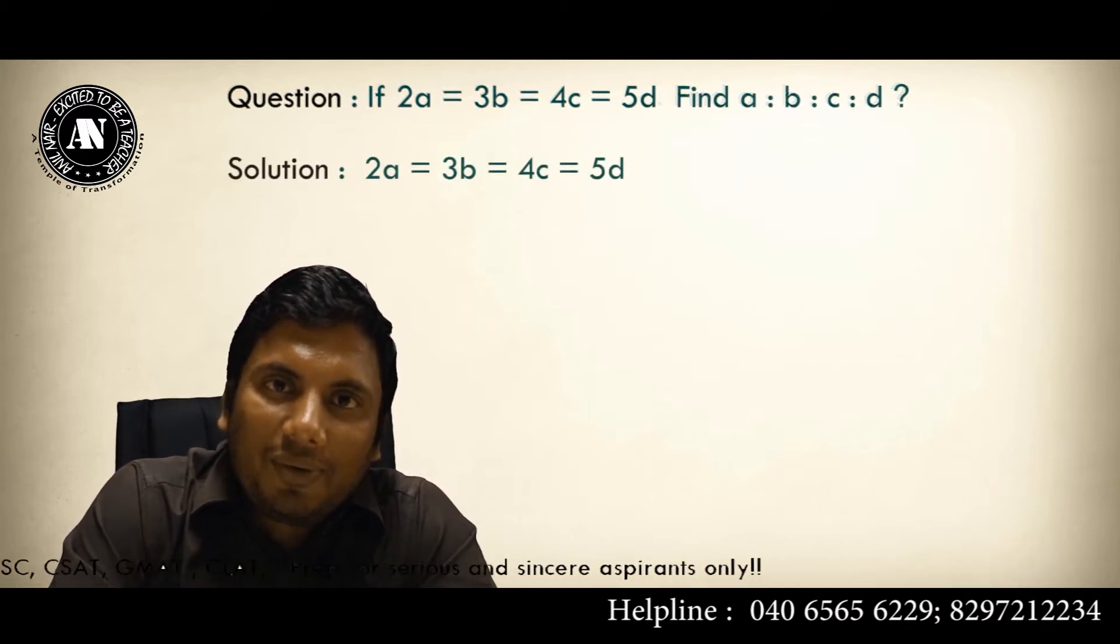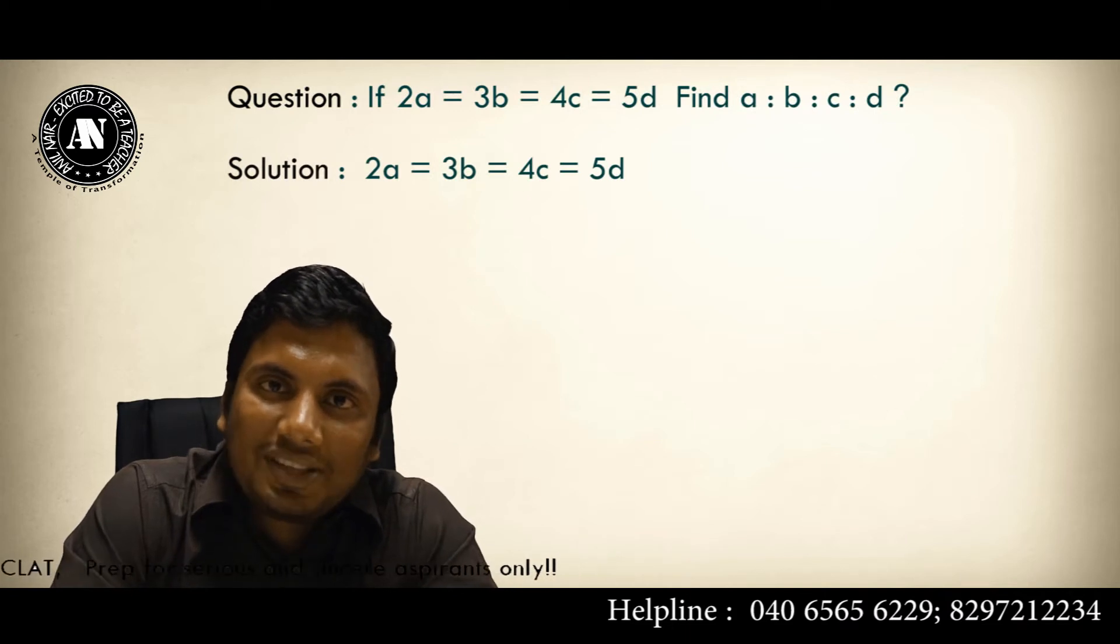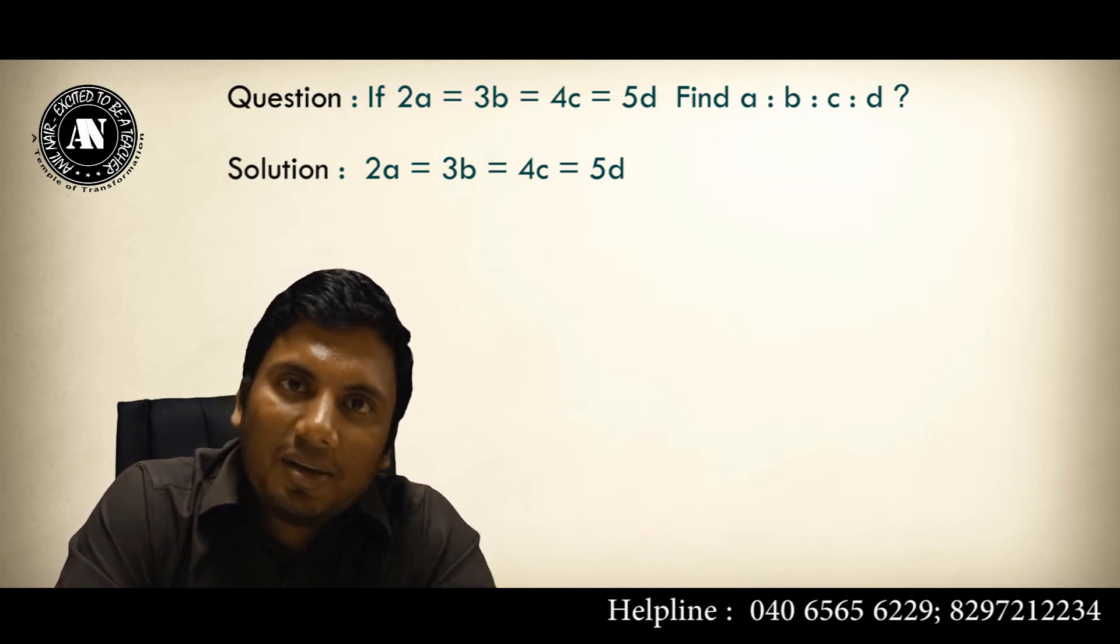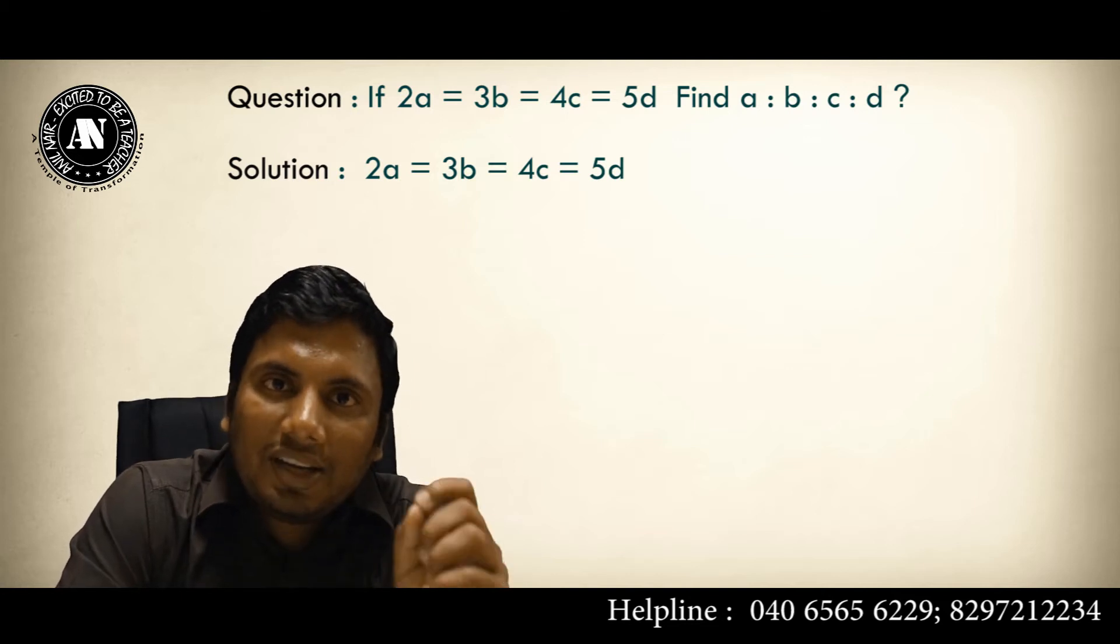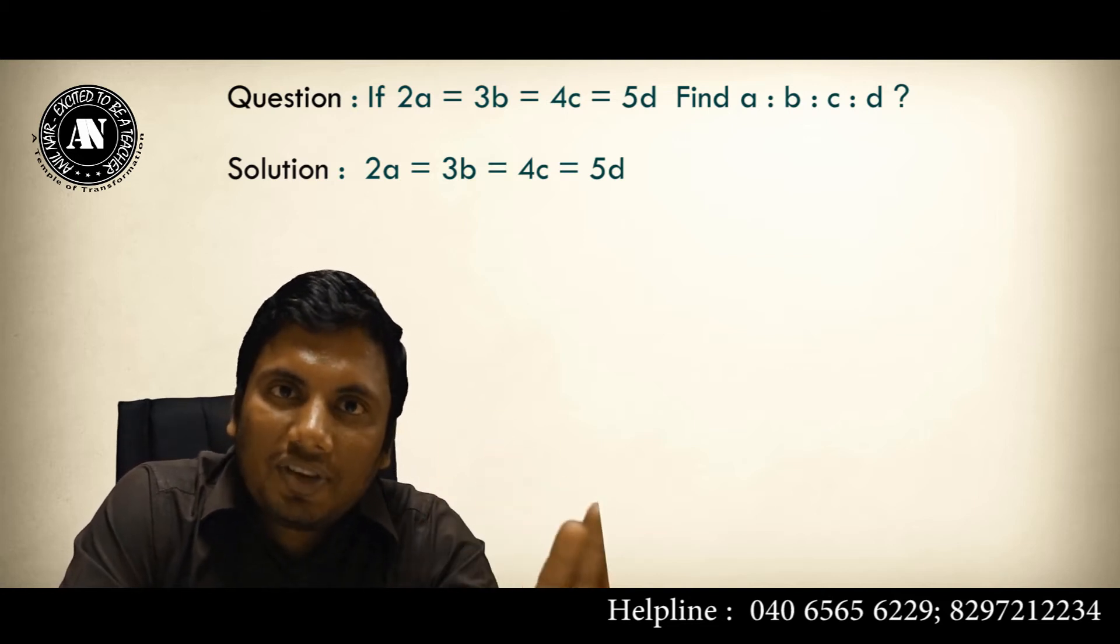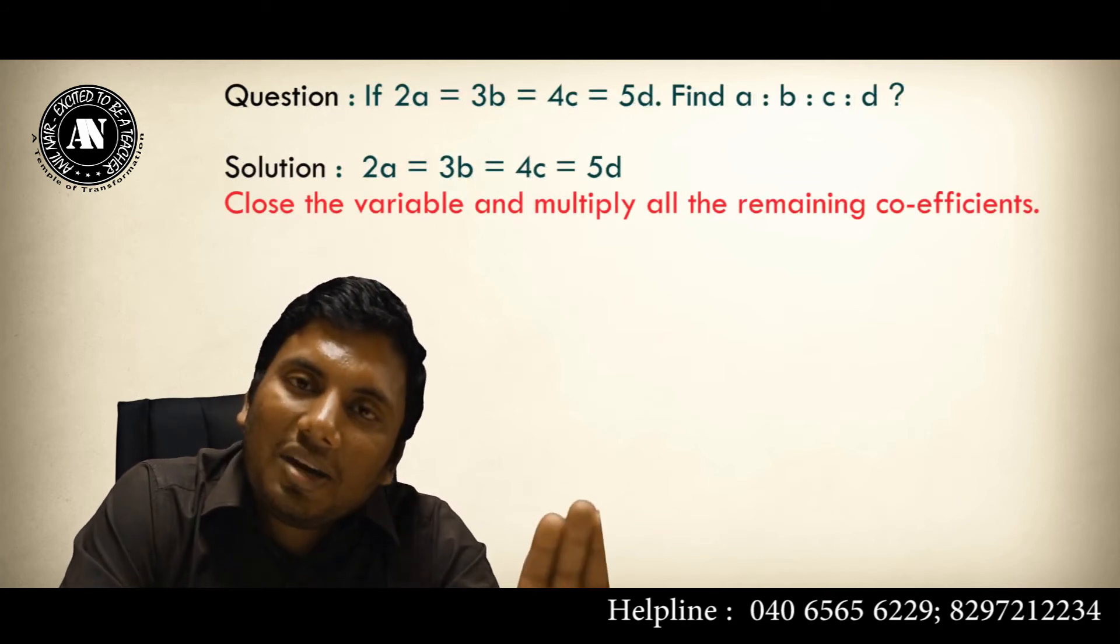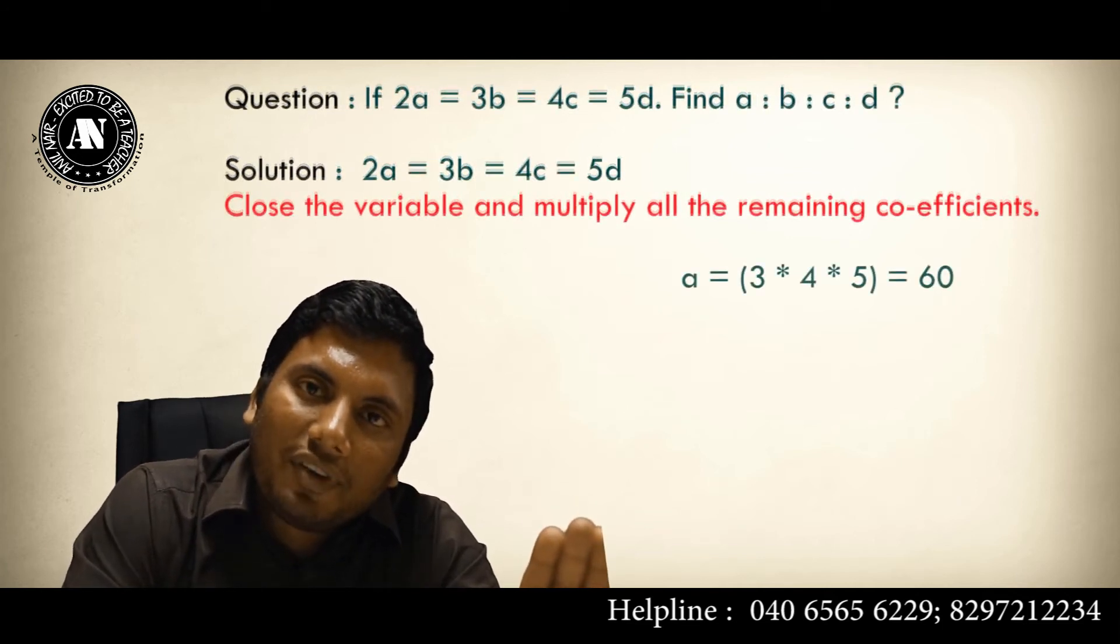Equation: 2A equivalent to 3B equivalent to 4C equivalent to 5D. We require A is to B is to C is to D. Step number one, in A is to B is to C is to D, what is the first variable? A. Okay. To get the first variable, close the first variable and multiply all the remaining coefficients. What are the remaining coefficients? 3, 4, 5. Multiply all.